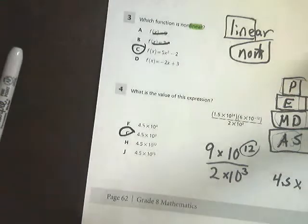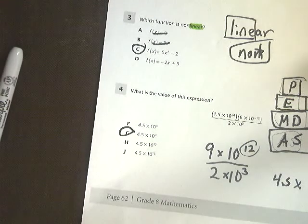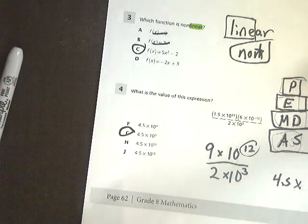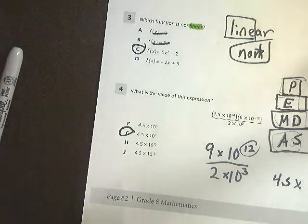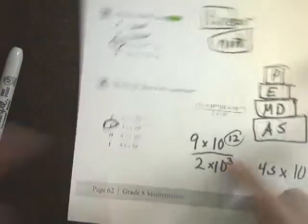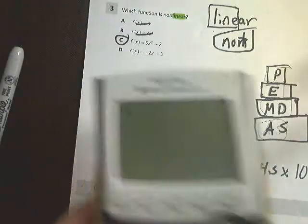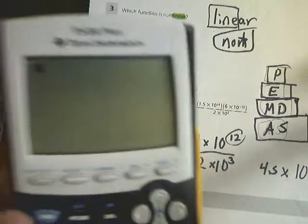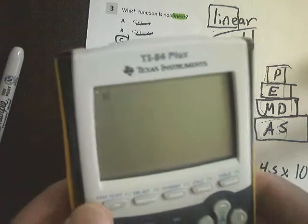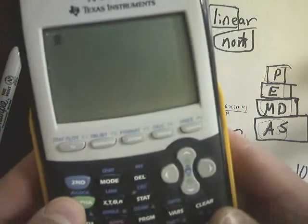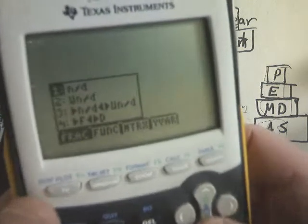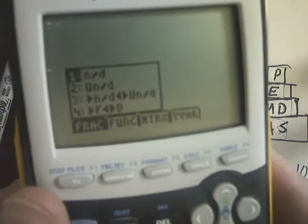Another way you could do it, for those less interested in spending your entire life doing this long math, is just to punch it in the calculator. In case you didn't know, the TI-84 has a fraction section, which is located when you hit alpha, then hit Y equals, and then this little menu pops up. That first one there is fractions.